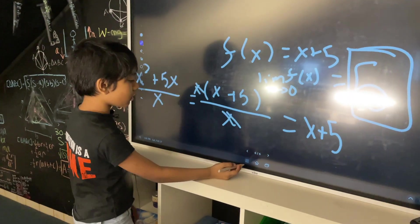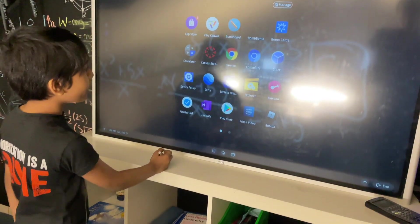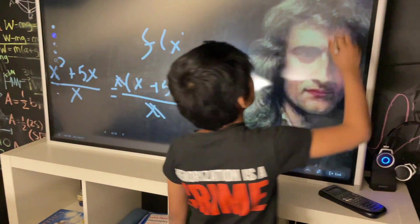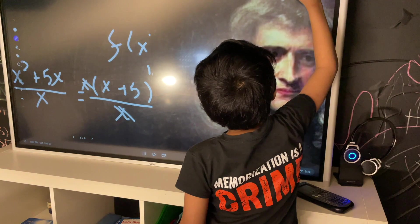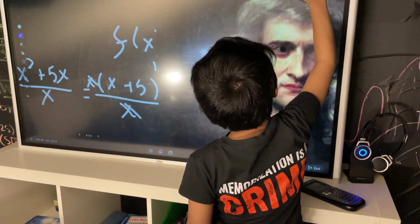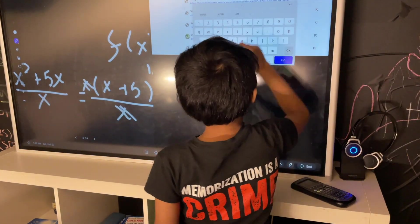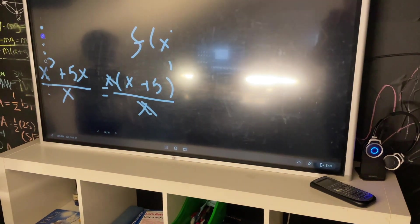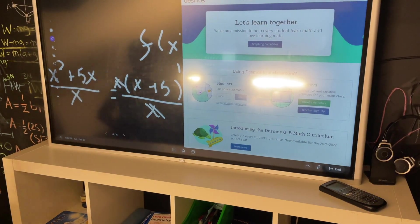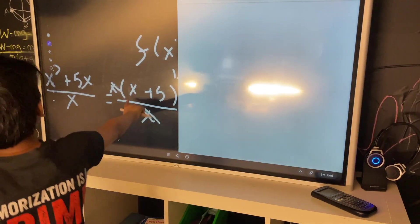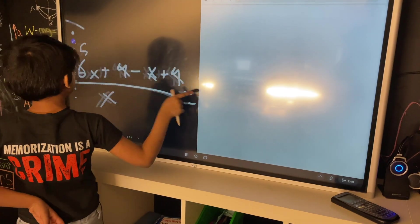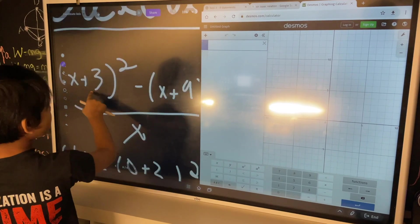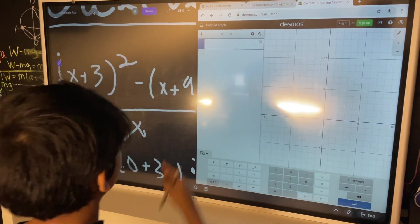And, you can also demonstrate this by going to Desmos. Wait, that's an instrument player? Klaxoom? So, if I go to Desmos, and I try to graph this, it's going to look the exact same as x plus 5.